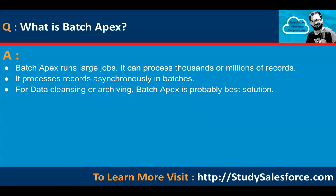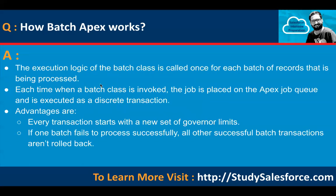Batch Apex runs large jobs and can process thousands or millions of records. It processes records asynchronously in batches, and for data cleansing or archiving, Batch Apex is probably the best solution. The execution logic of the batch class is called once for each batch of records being processed. Each time a batch class is invoked, the job is placed on the Apex job queue and executed as a discrete transaction.